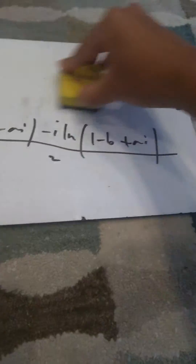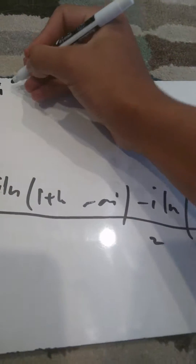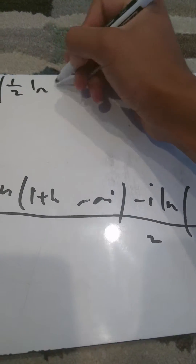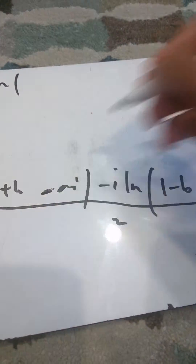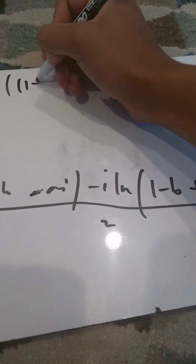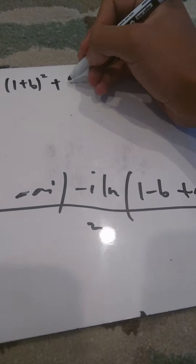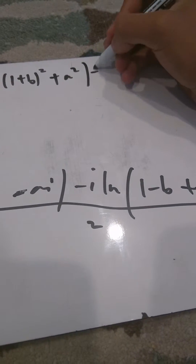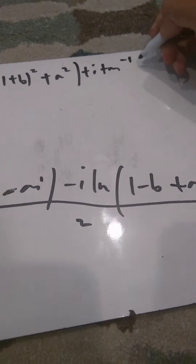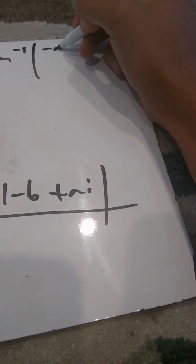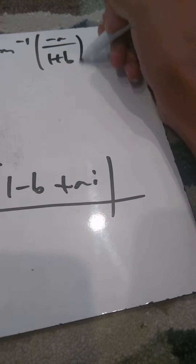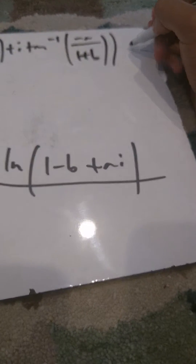Now we can use the natural log of a complex number formula. So i times ln gives us one half ln of (1 plus b) squared plus negative a squared — which is just a squared — and then we have plus i times arctangent of negative a over (1 plus b).